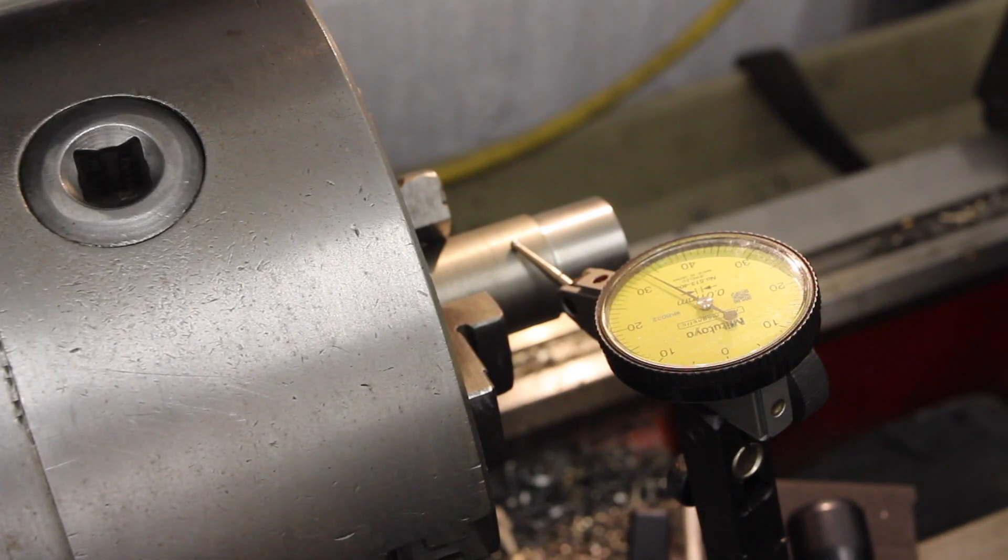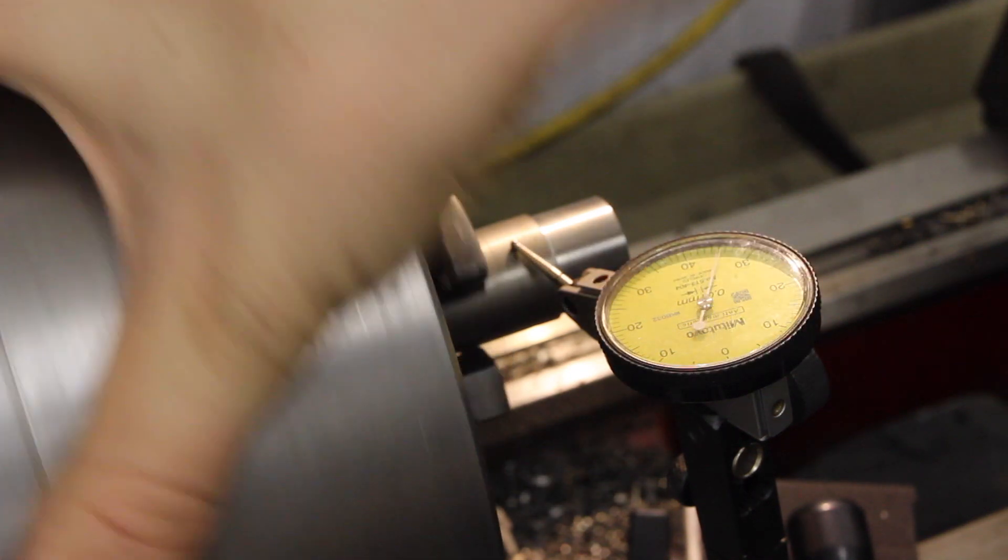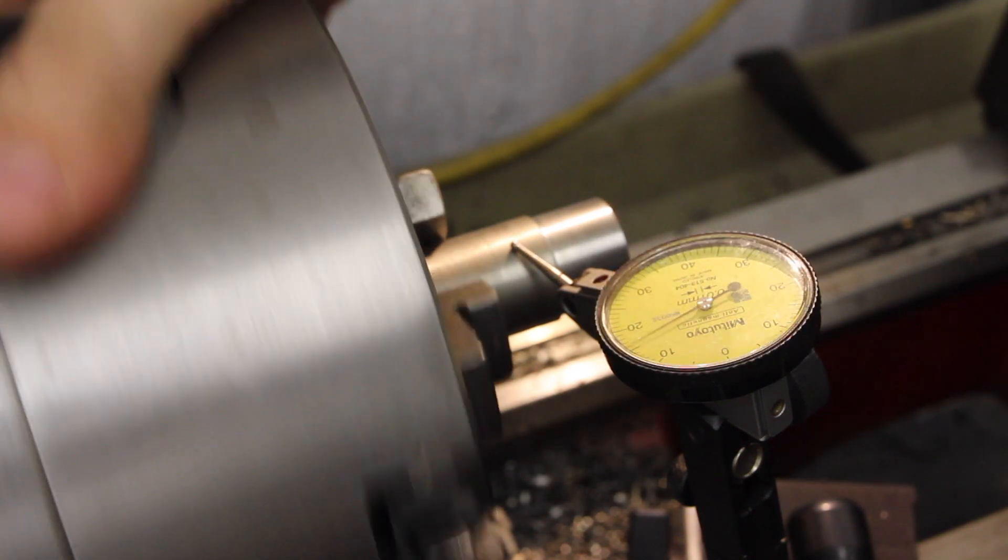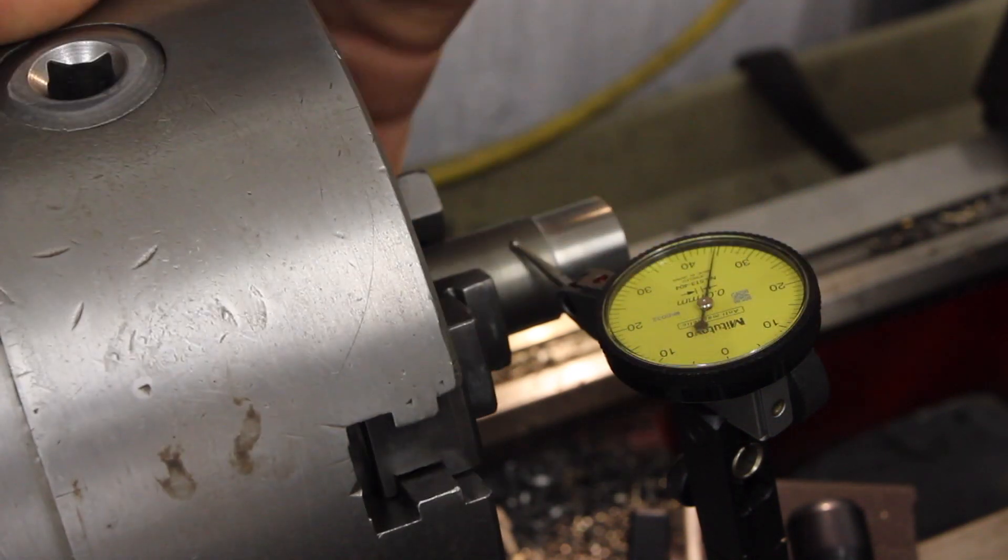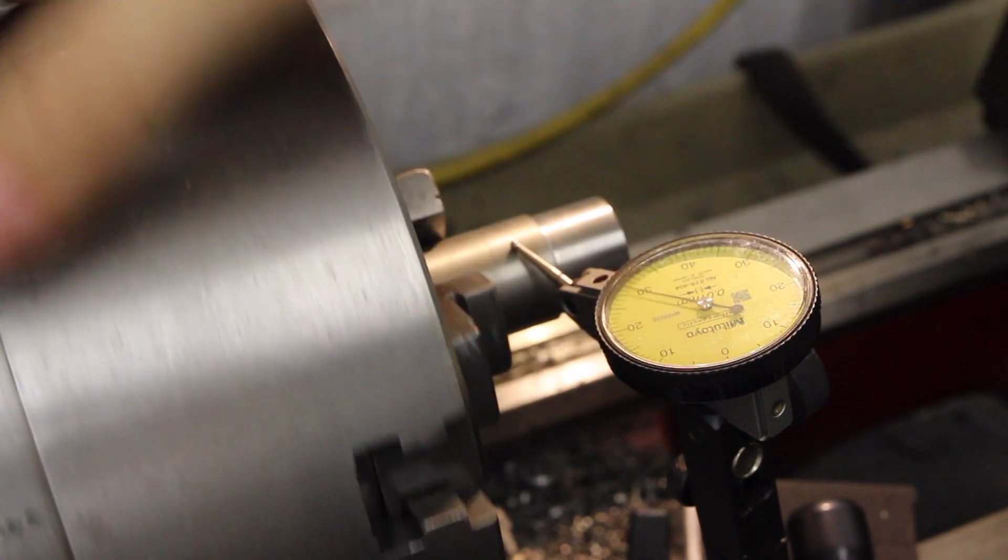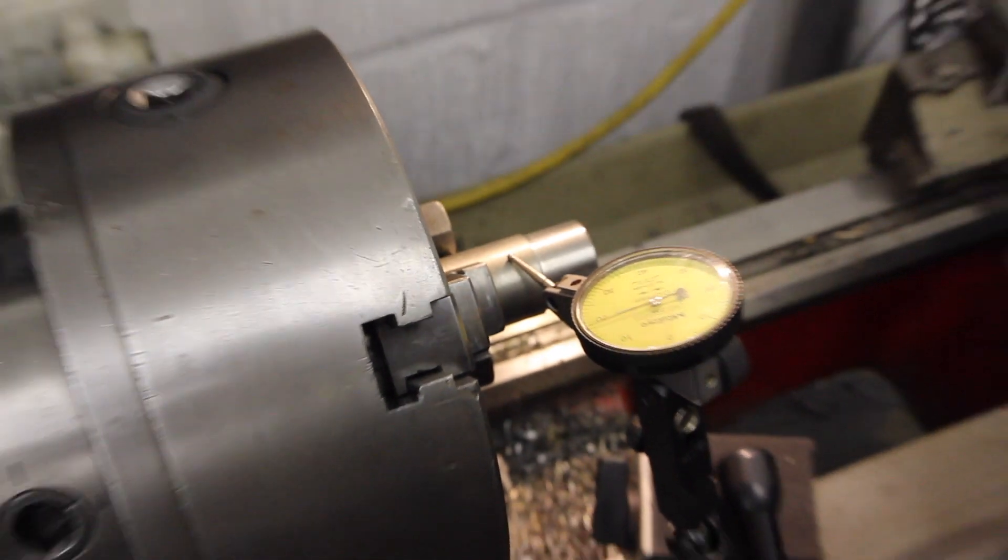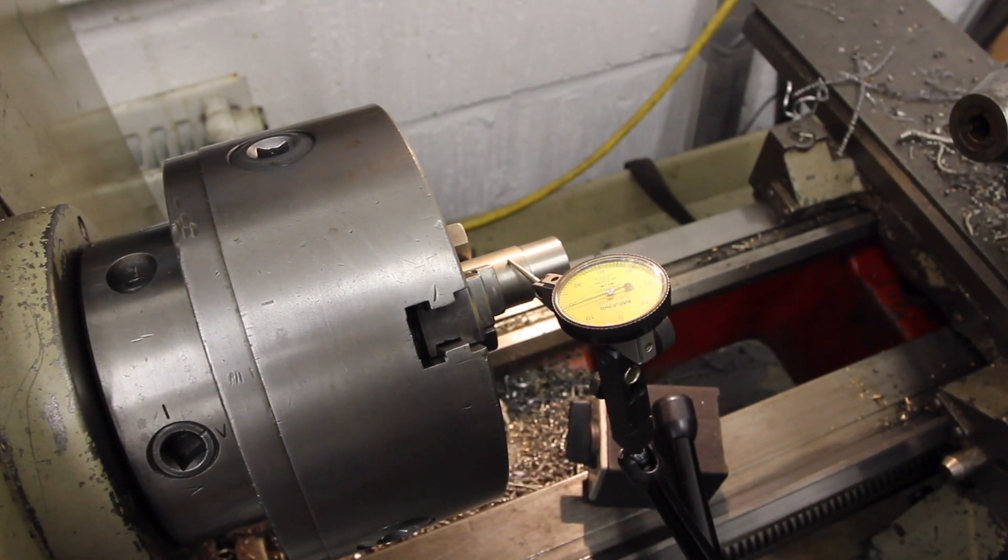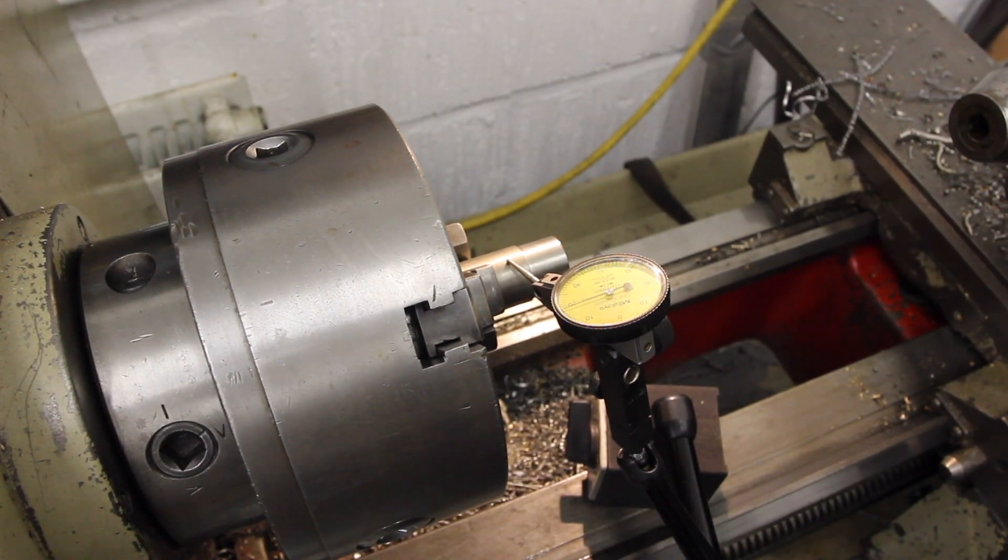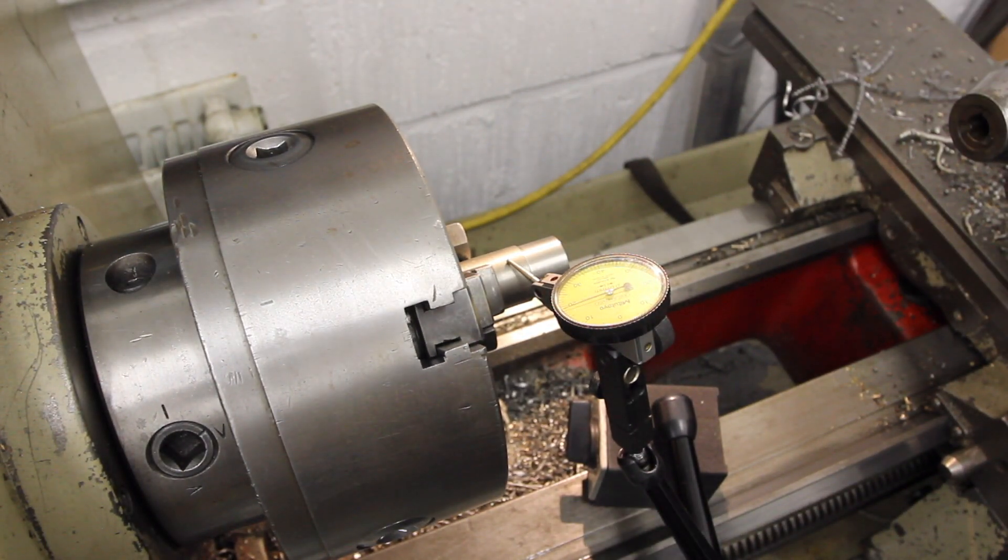So something you see a lot as well is people chasing good runout with a three-jaw chuck. I've just stuck this in here and you can see you've got some considerable runout here. What people don't realize is that you can actually tap the jaws and get your runout a lot better.